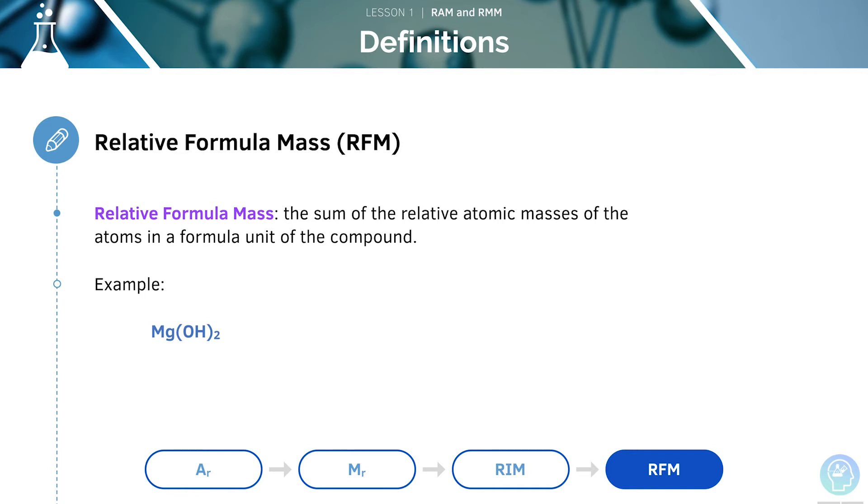First, we need to write out the elements that are present. These will be magnesium, oxygen and hydrogen. Now, we must write out the relative atomic masses of each of these elements. So, for magnesium, this would be 24. For oxygen, this would be 16. And for hydrogen, this is 1.